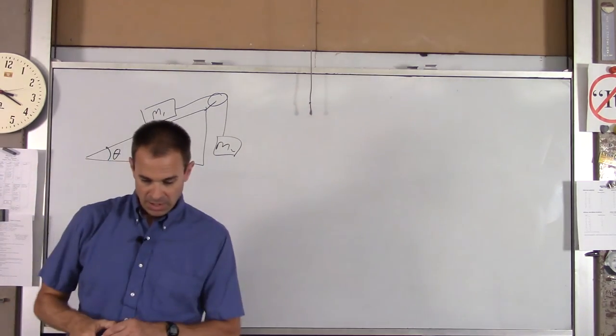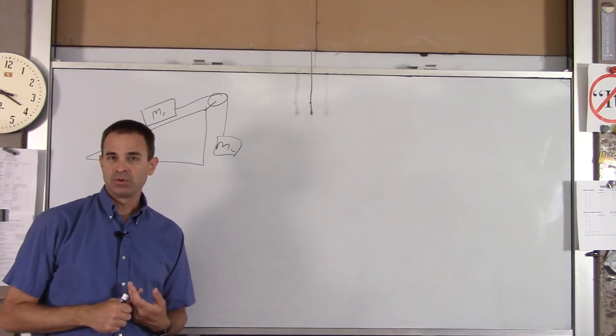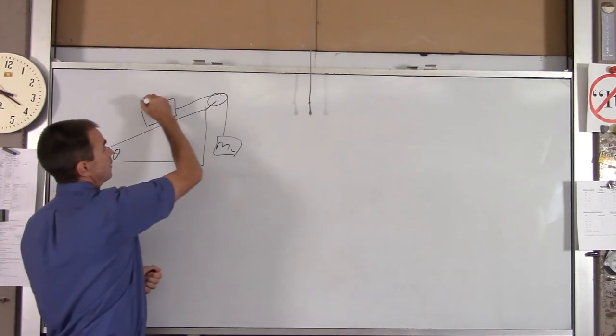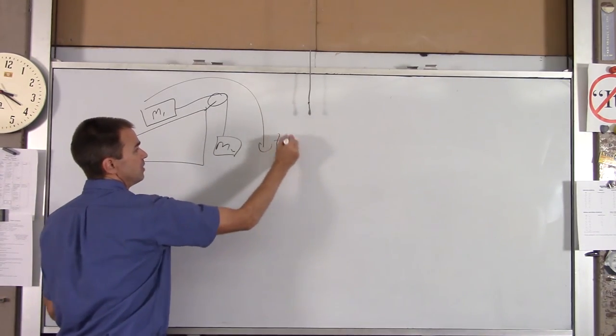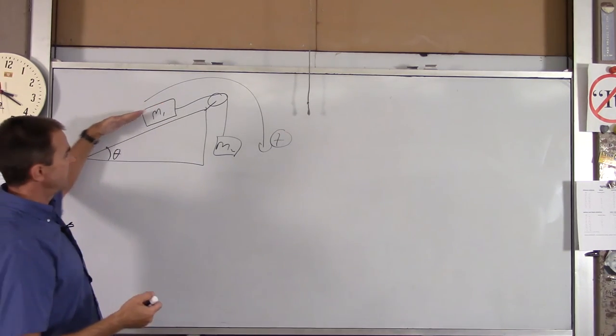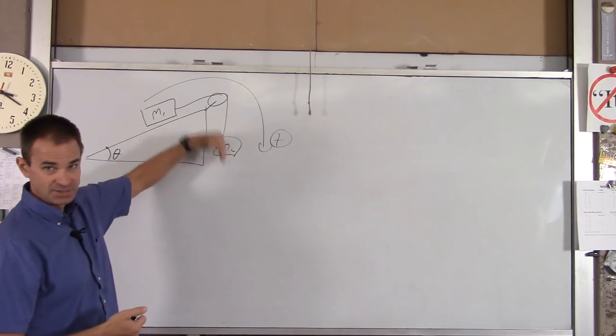So whether there's friction or not, you have to guess which way the system is going to go. So I'll make a guess. I will assume that it's going to go clockwise. So that's going to be our positive direction. Locally, for this guy, up the incline is going to be positive. And locally, for this guy, down will be positive.